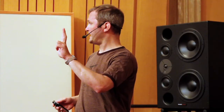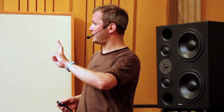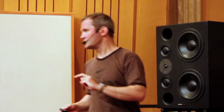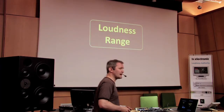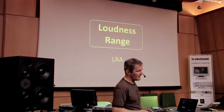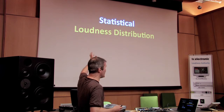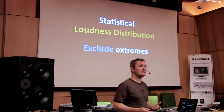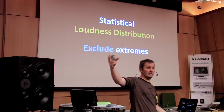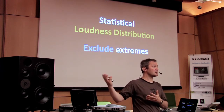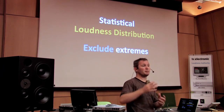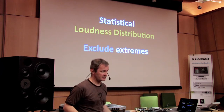We have another parameter in R128: loudness range. It is based on a statistical measure — specifically the distribution of loudness levels, excluding the extremes, so that a single gunshot like the one we heard in this excerpt of No Country for Old Men would not bias the loudness range measurement.